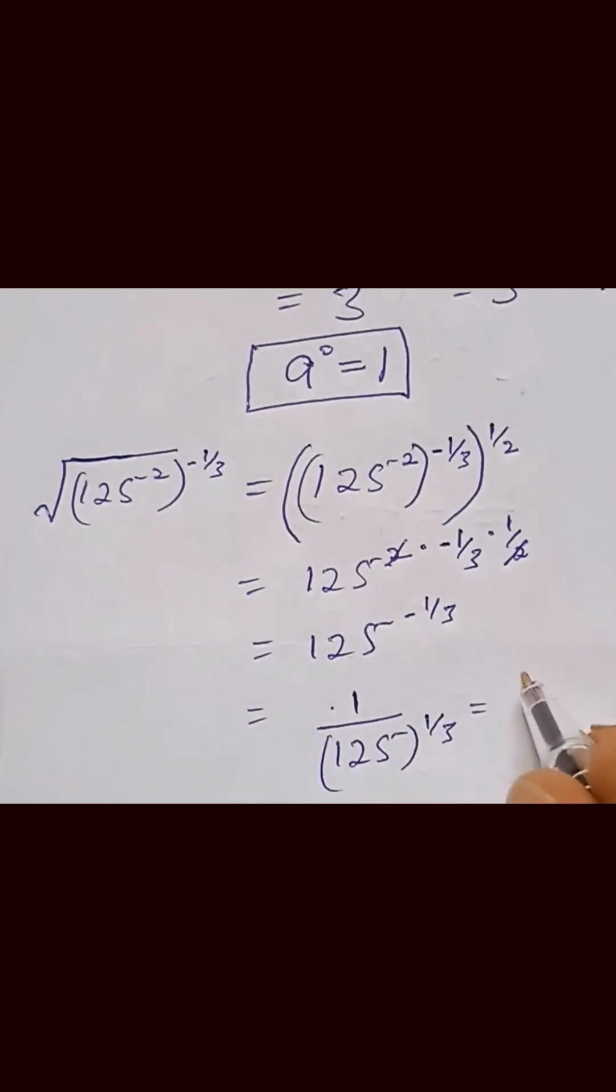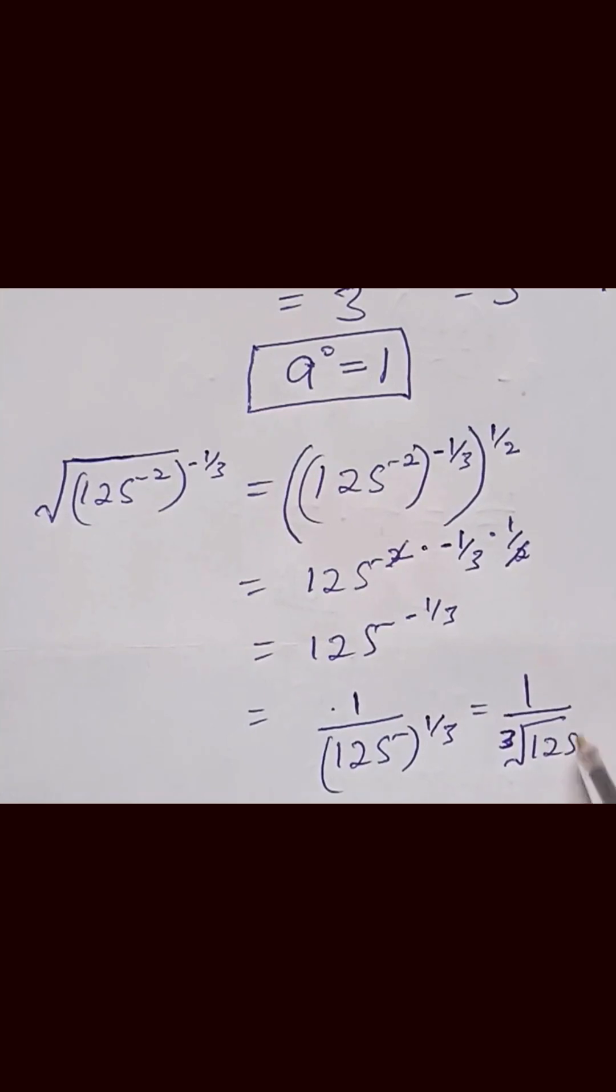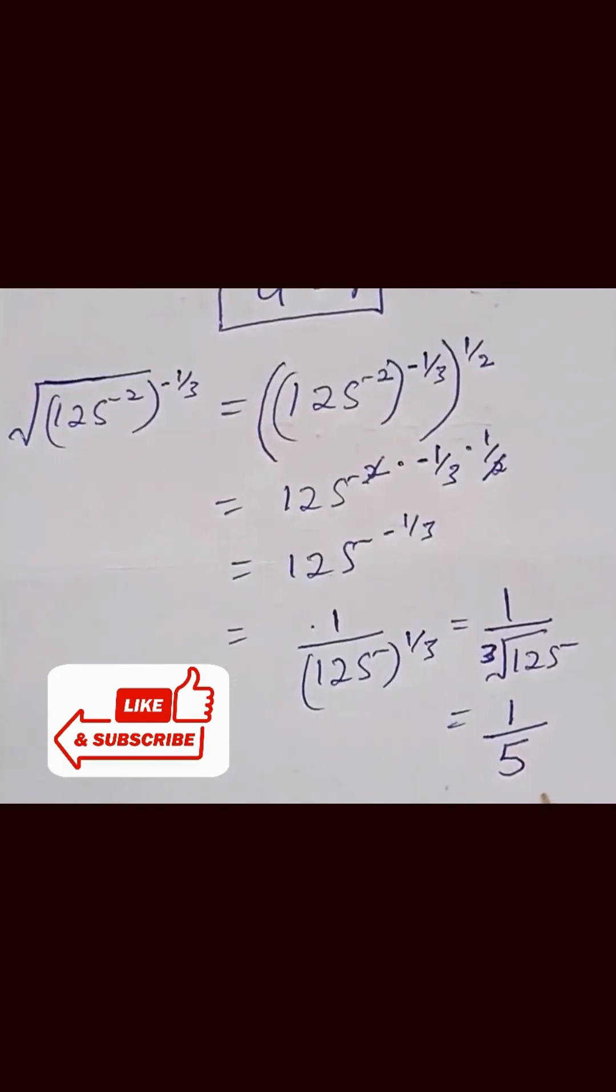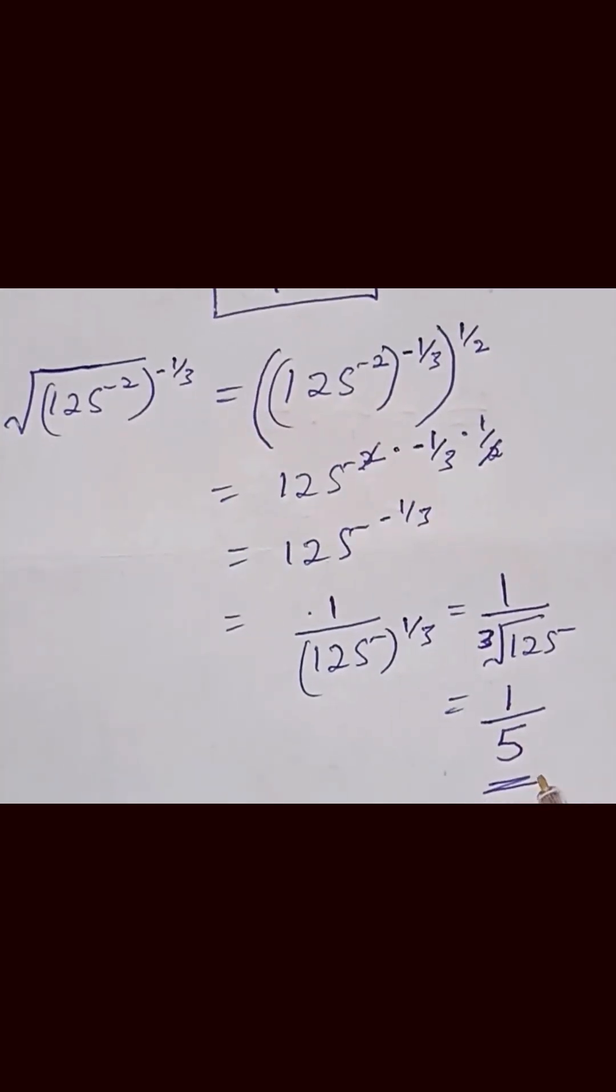And that is written as 1 over the cube root of 125, which gives us 1 over 5. So that is your final answer.